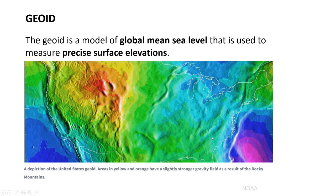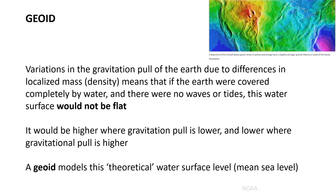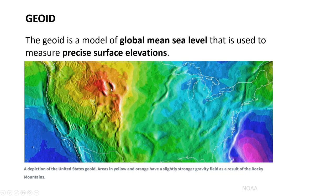Here's a depiction of what the geoid looks like over the U.S. The colors indicate density differences — over the Rockies there's higher density because it's made of rock, versus near Indiana where we have lower density with softer soils. Higher density gives you a higher gravitational pull. If there were no land masses on the Earth and it was covered in water, the water would be lower near the Rockies because it's being pulled down by that greater gravitational force.